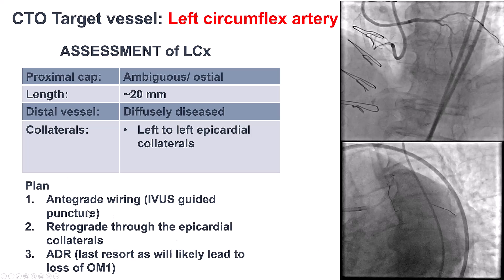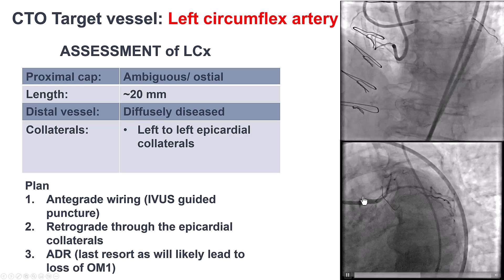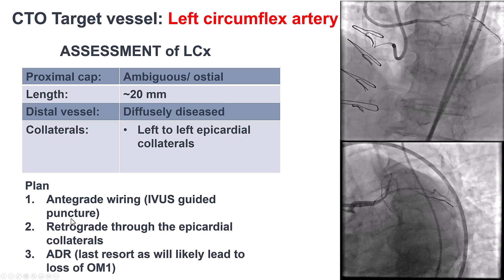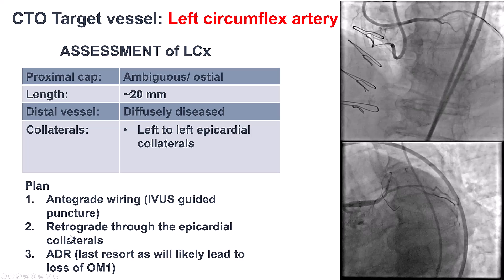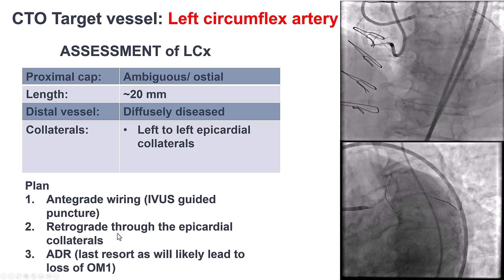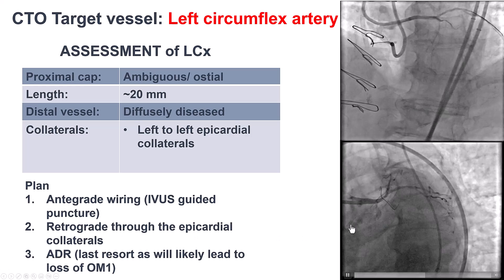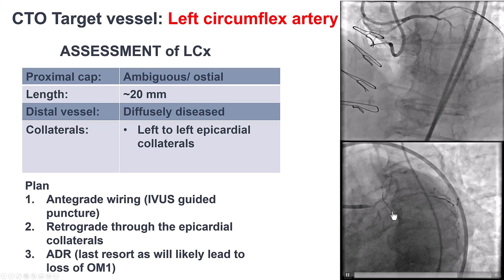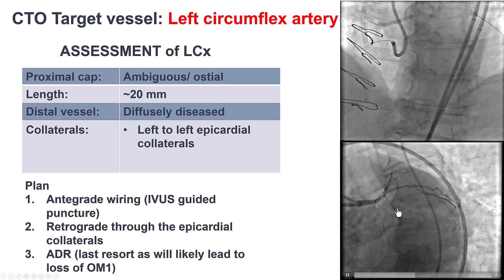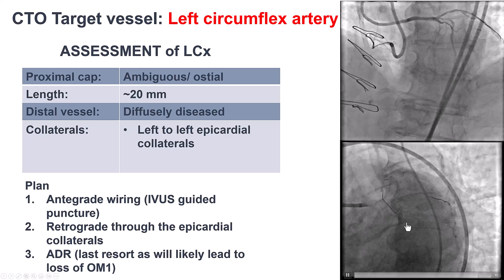The plan was to go with antegrade wiring using IVUS to clarify the proximal cap ambiguity, then use retrograde. However, we were not sure that these collaterals would be crossable, and finally use ADR as a last resort because there was a bifurcation of obtuse marginal and circumflex at the distal cap.